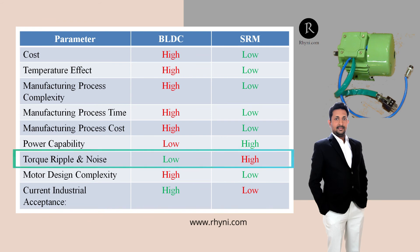Torque ripple and noise: The SRM is generally known for higher torque ripple and acoustic noise than any other motor. This is because of its torque producing mechanism — it produces only an attraction force as there is no secondary magnetic field, whereas BLDC can produce torque by both attraction as well as repulsion effect. Simultaneous phase excitation techniques and higher numbers of phases are some techniques used to reduce the torque ripple and acoustic noise of the SRM. Thus torque ripple and noise are more problematic in SRM compared to BLDC.